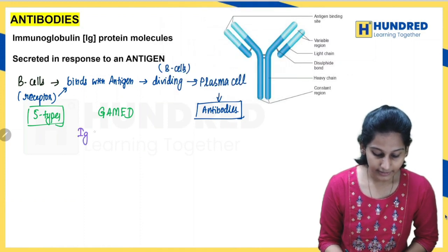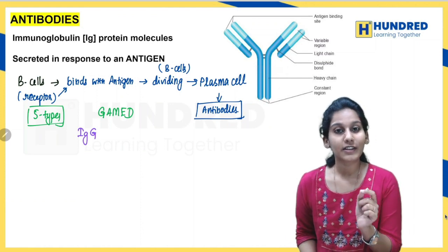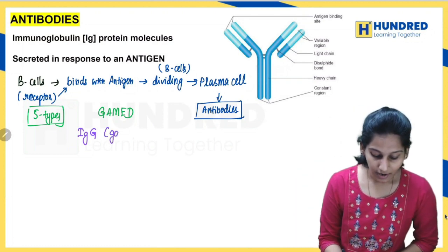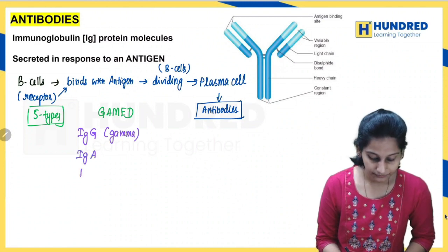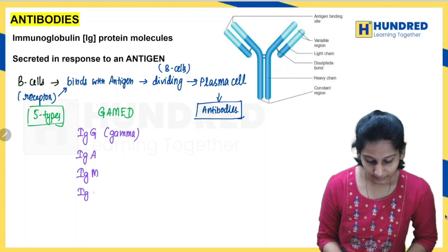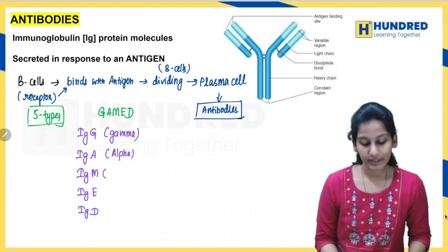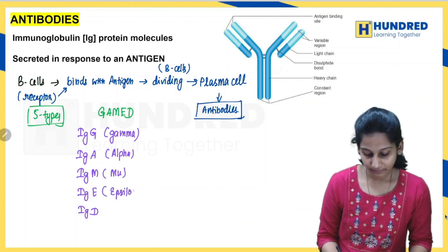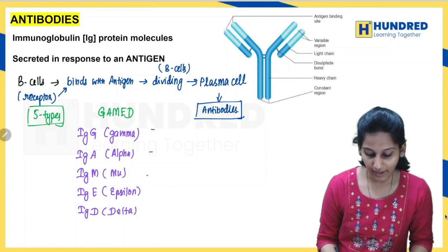The antibodies are named as immunoglobulins, so we give them the prefix Ig. IgG is gamma immunoglobulin. Then we have IgA — alpha. IgM — mu. IgE — epsilon. And IgD — delta. These are the five different types of antibodies.